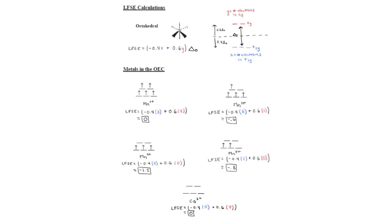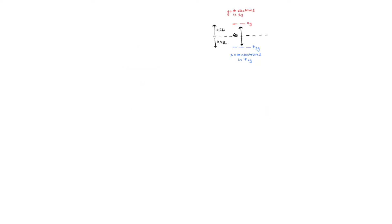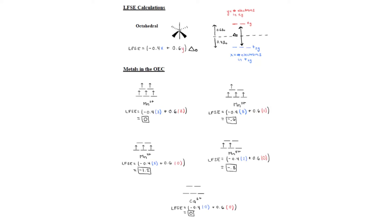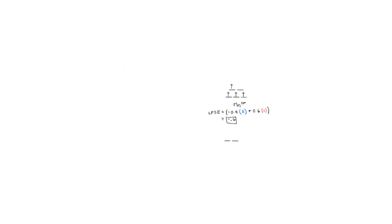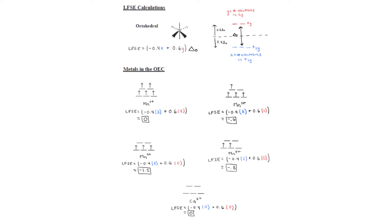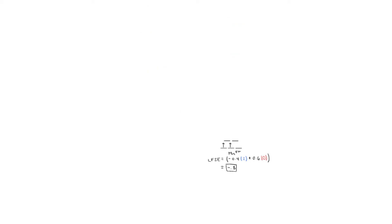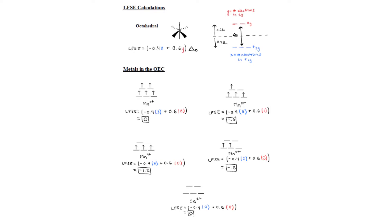Overall, if there are more electrons in the antibonding EG orbitals, then the metal is more labile. Manganese 3+ has an LFSE value of -0.6 and Mn5+ has an LFSE value of -0.8. These two oxidation states are relatively stable and not very labile. The +2 to the +5 range of oxidation states for manganese is an advantage for its role in water oxidation of photosystem II.